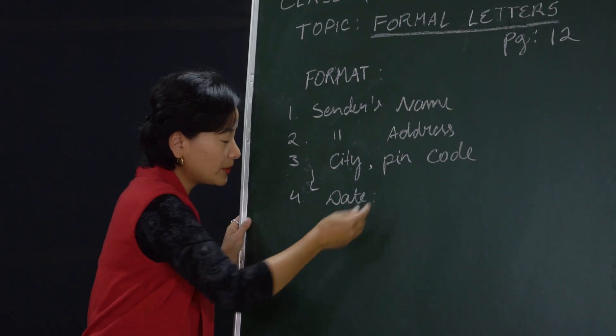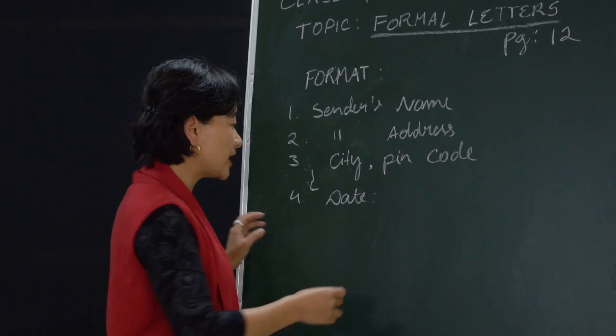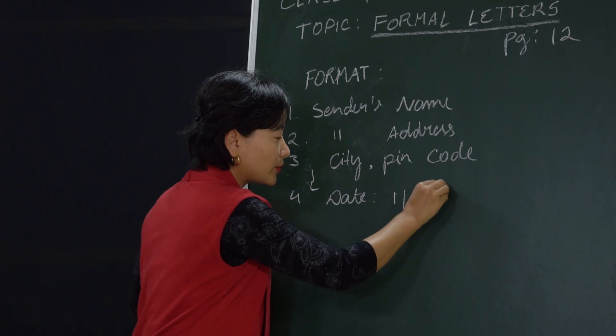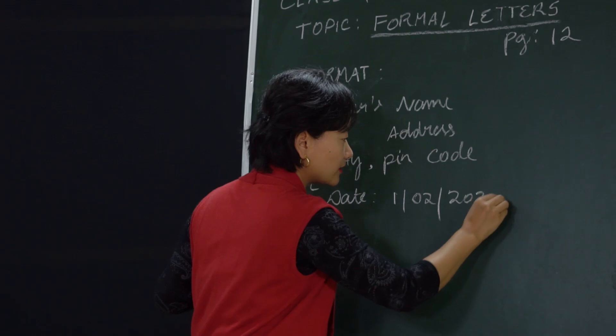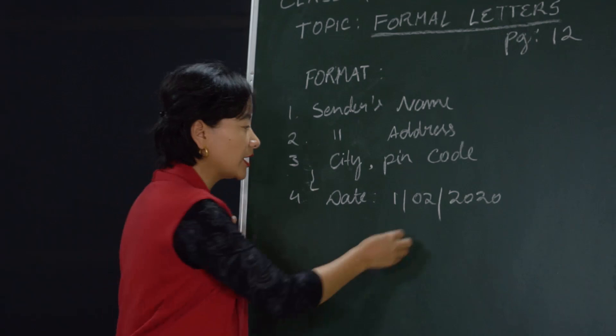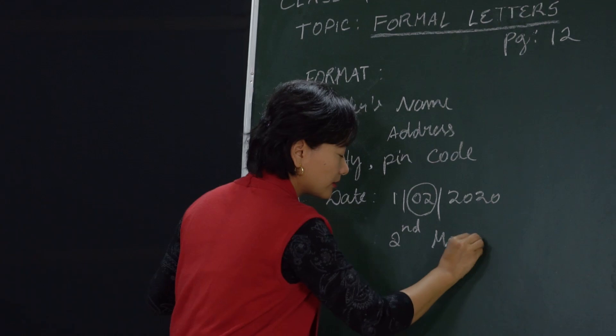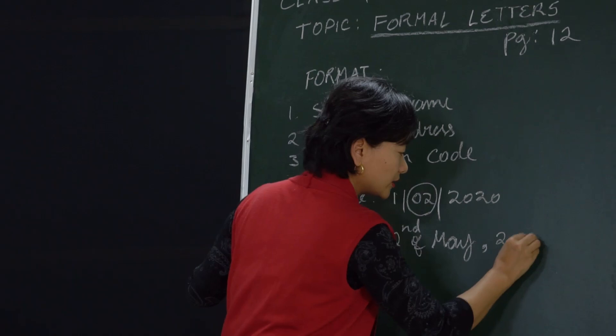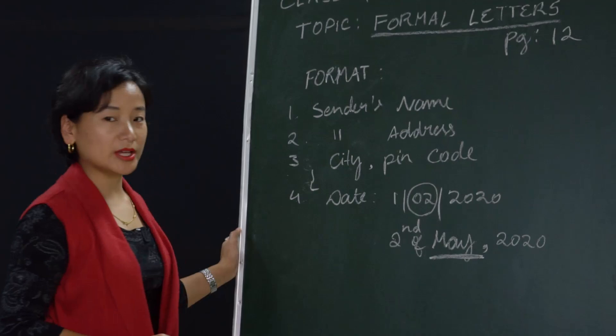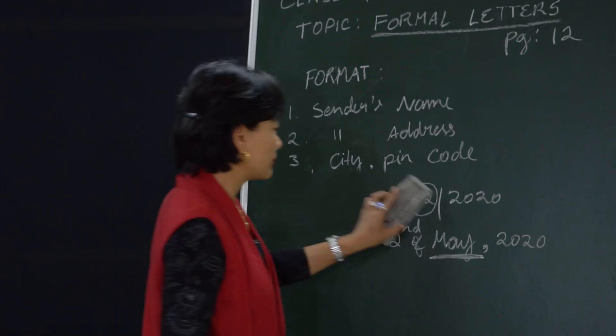After the sender's address, leave one line and then write the date. Many people write dates differently. The preferred format is to write it clearly — for example, 2nd of May, 2020 — spelling out the month so it is clear. Write the date in that manner.